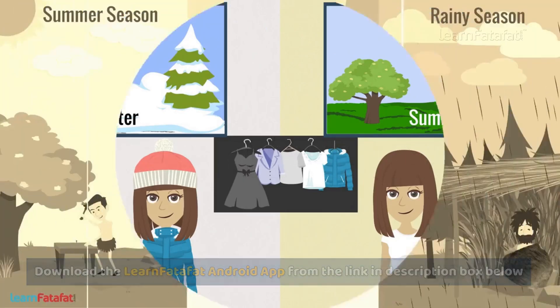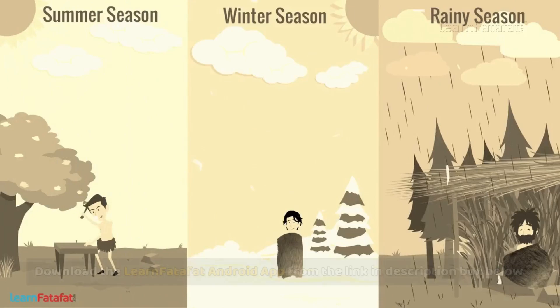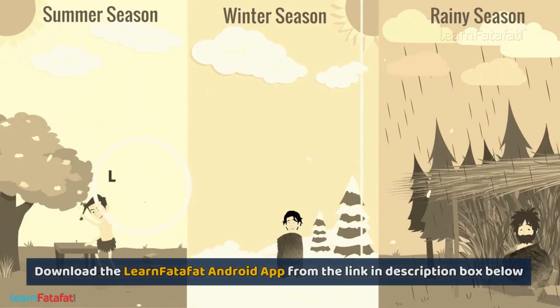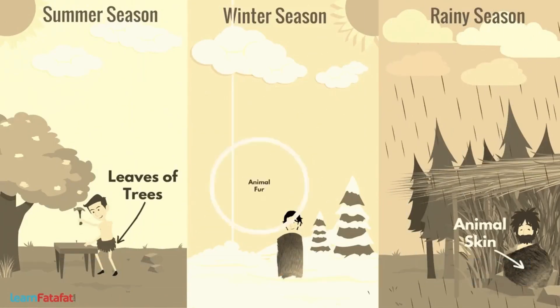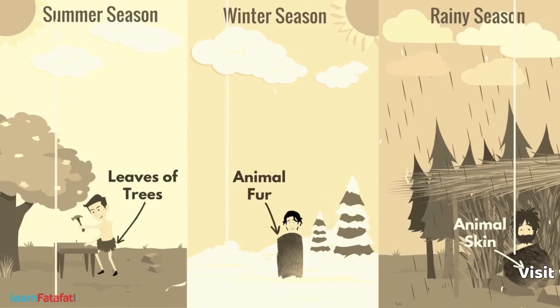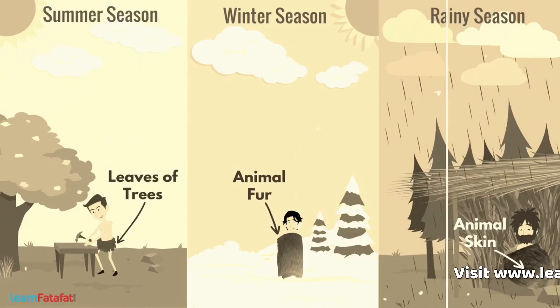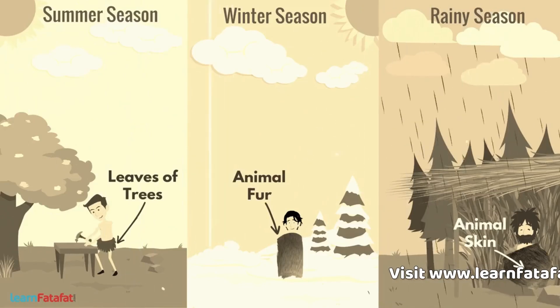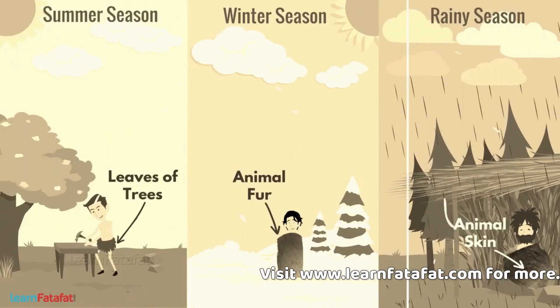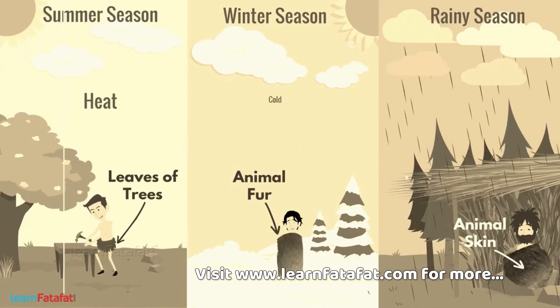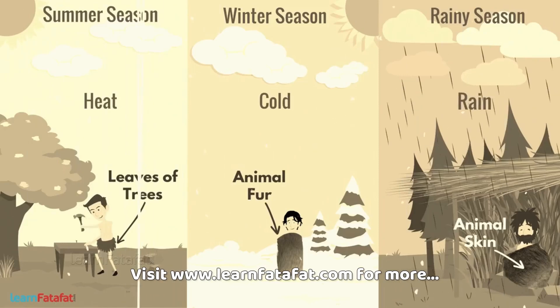In ancient times, people used big leaves of trees, animal skin or animal furs to cover themselves, as well as to have protection from heat, cold and rain.